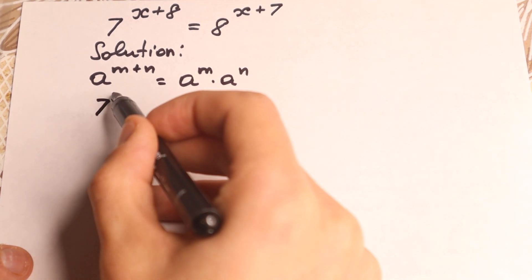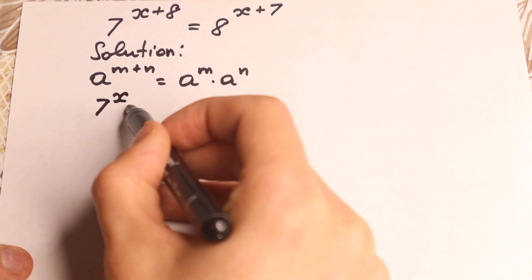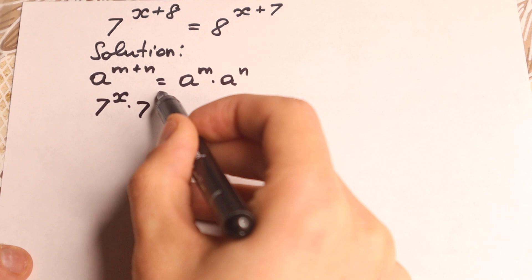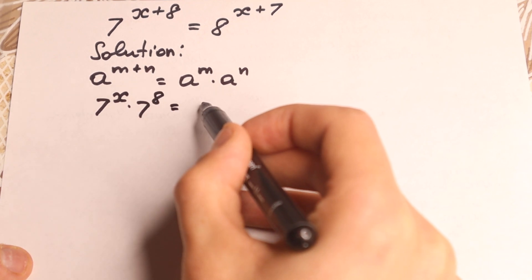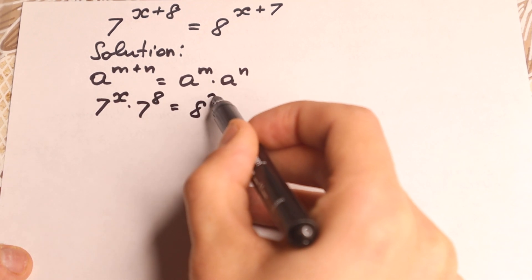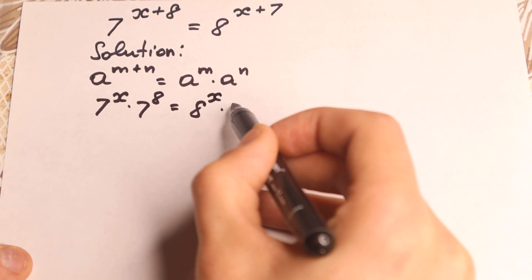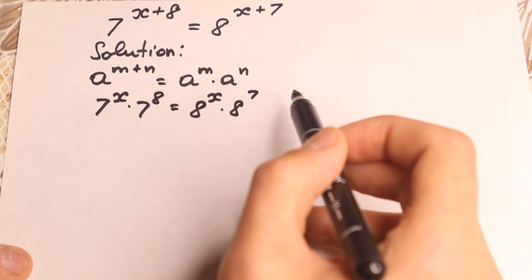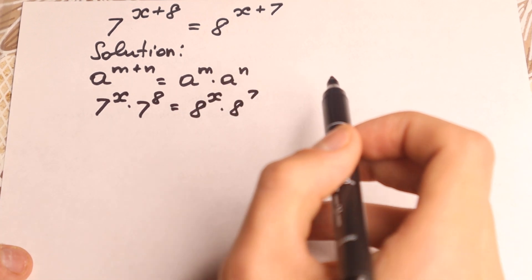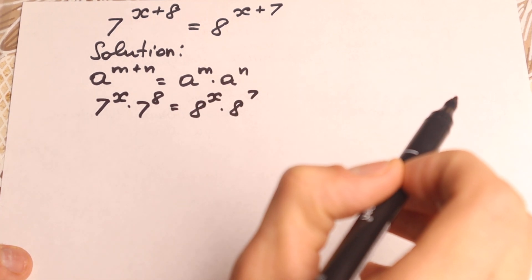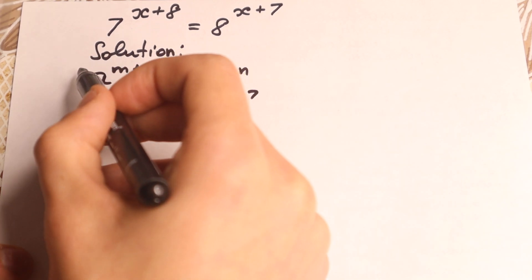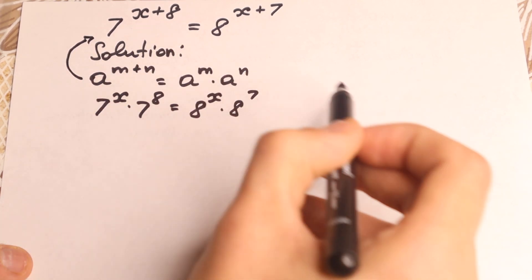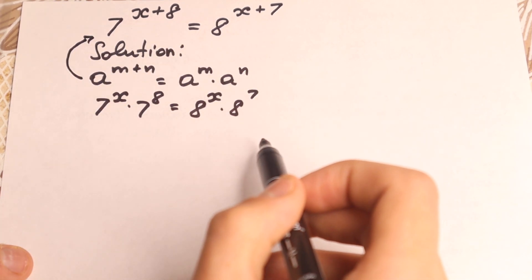As a result, we'll have 7 to the x times 7 to the 8th power equal to 8 to the x times 8 to the 7th power. We apply just this rule to our left and our right hand side.